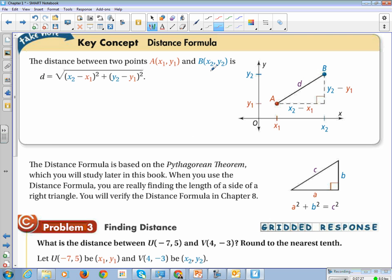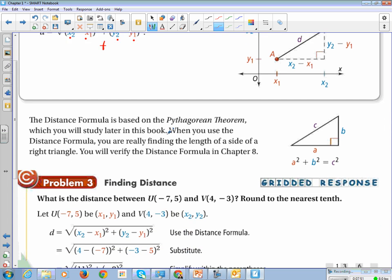Alright, let's move on to the distance formula. Distance formula is the x-values subtracted and squared, the y-values subtracted and squared, added together, and then taken the square root. This is based on the Pythagorean theorem, so that's where the square roots come from.